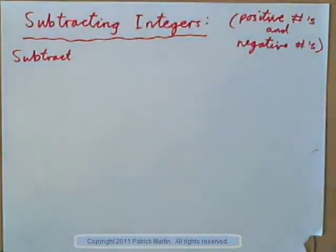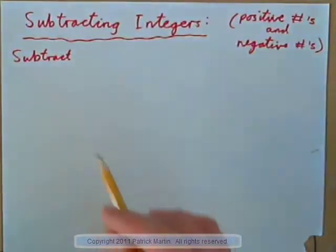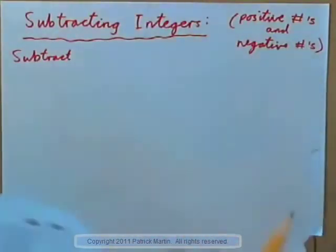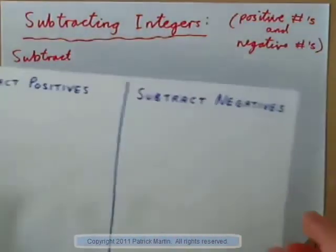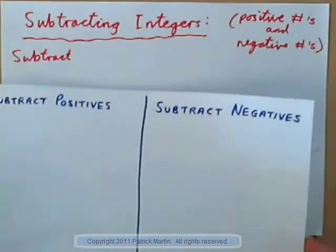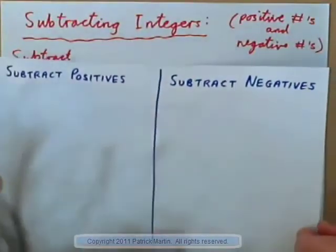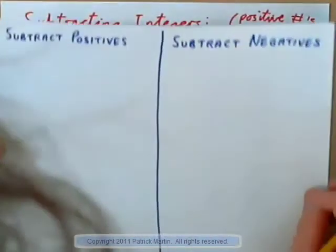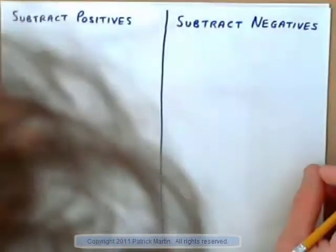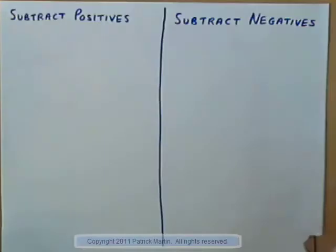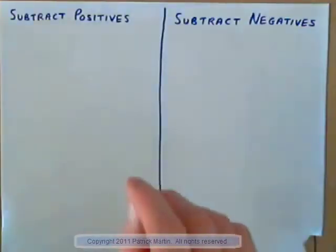We know how to add integers, so let's have a look at subtracting integers. Integers are positive and negative numbers, not fractions or decimals — just positive and negative whole numbers. So let's have a look at subtracting positives, and then look at subtracting negatives.